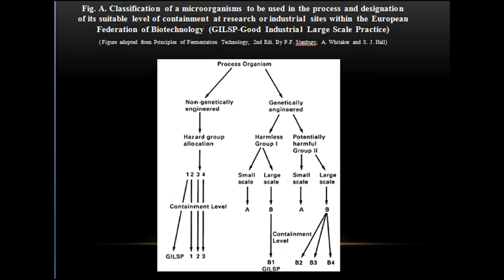Winkler and Park in 1992 described the details of risk assessment at various stages and different ways to reduce it. The following figure shows a classification of microorganisms used in processes and the designation of suitable levels of containment for research or industrial sites within the European Federation of Biotechnology. Process organisms can be broadly classified under two categories: non-genetically engineered organisms and genetically engineered organisms.